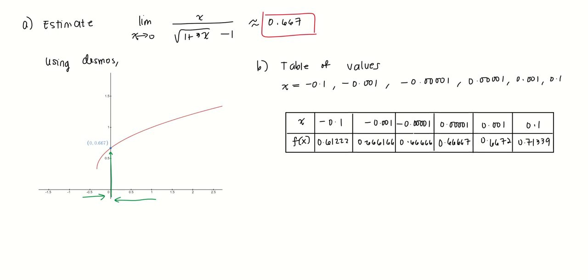Looking at these values here, we find that as x goes closer to 0, either from the left or from the right, the value is approaching 0.666.